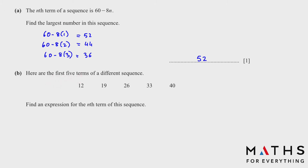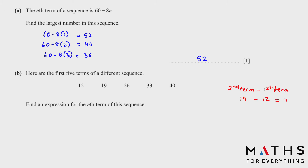Part b: We have been given the five terms of a different sequence. Find an expression for the nth term. First, find the difference between consecutive terms — it's always the second term minus the first term. Our second term is 19 minus 12, which is 7. Or just look at the sequence: 12 plus 7 is 19, 19 plus 7 is 26.